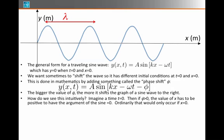If phi equals 0, the value of x has to be positive in order to have the argument of the sine be equal to 0. Ordinarily, with no phase, that would occur if x equals 0. But now I need a positive number in there for x in order to cancel out everything inside the argument.